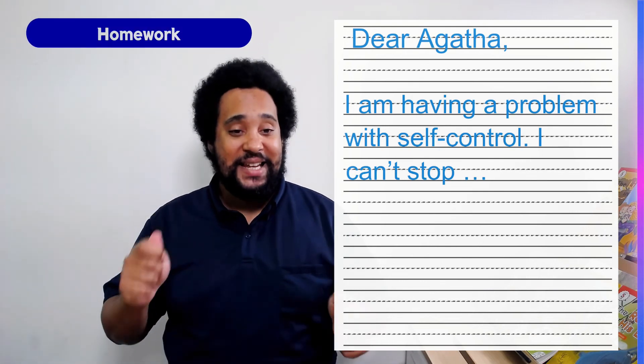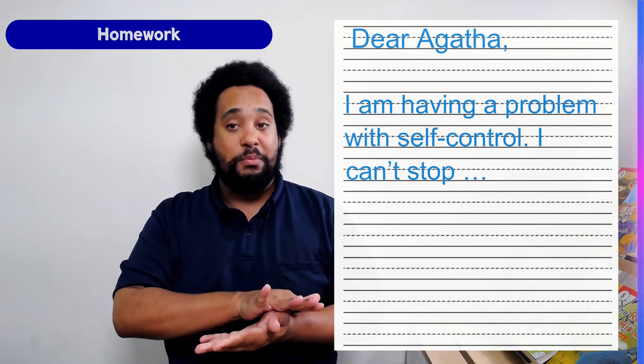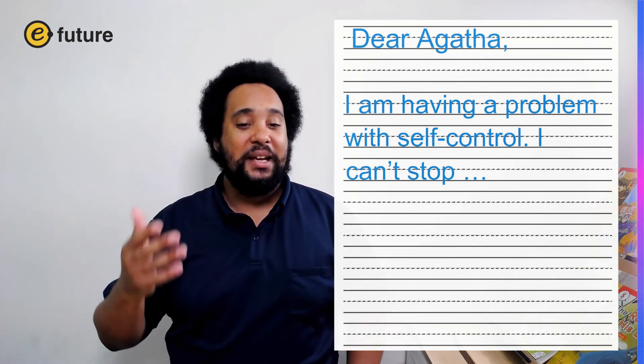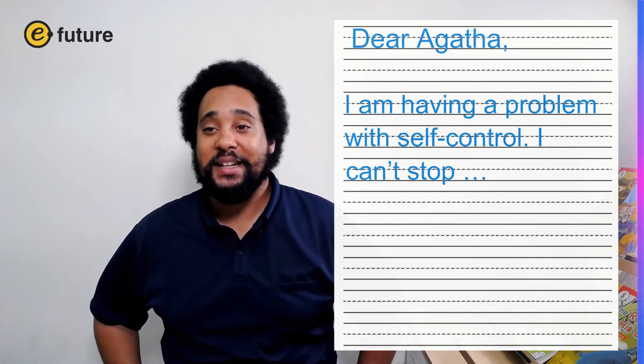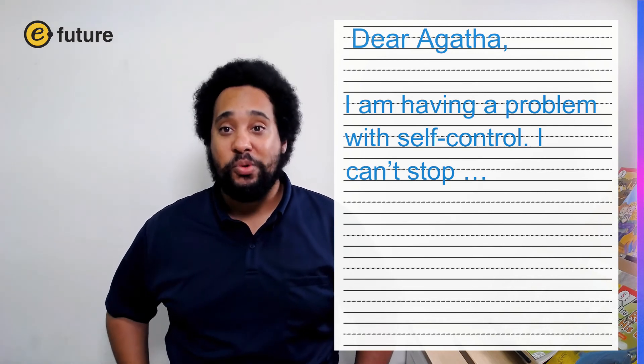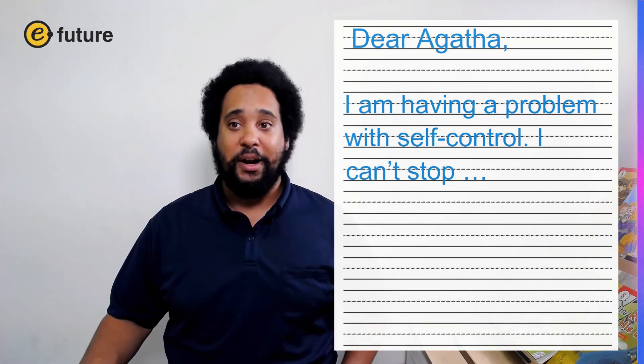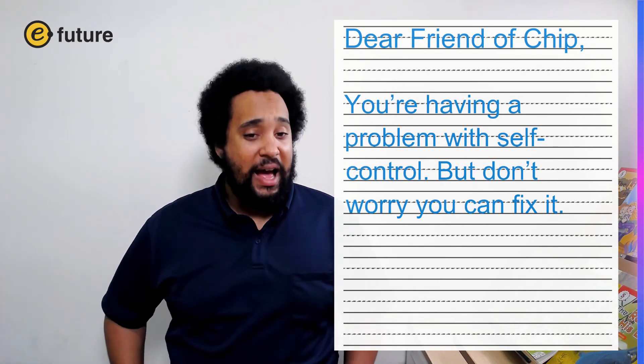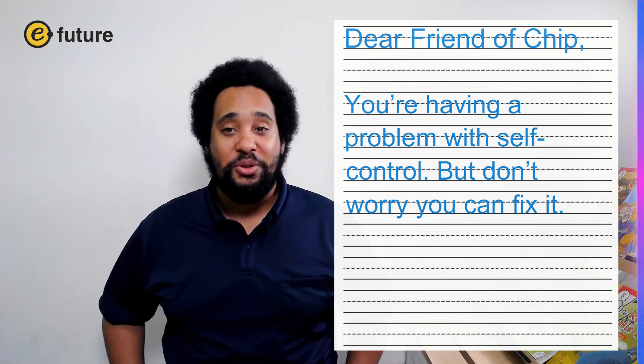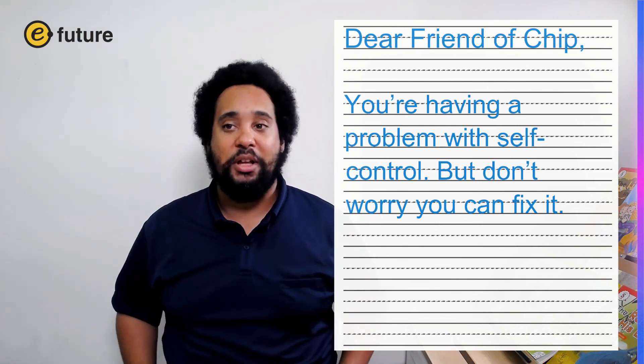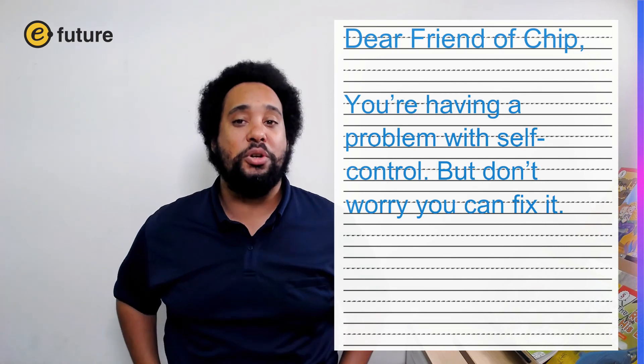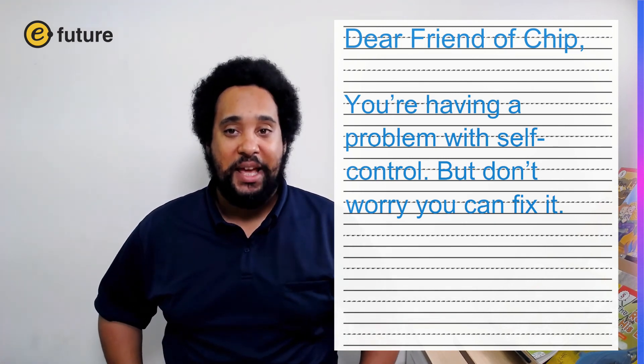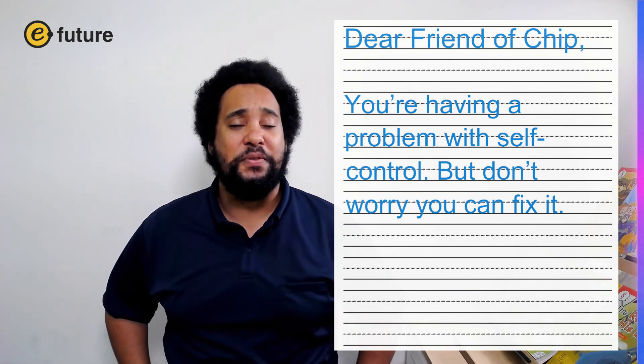For homework, please take this email that I give you. And on the other side of the paper, I want you to write a response like Agatha answers. So you're going to write another email, making a suggestion for how your classmate can solve their problem. If you don't know how to write a response, look at Agatha answers email in the story for help. So you will write an email like this. So an example, dear friend of chip, you are having a problem with self control. But don't worry, you can fix it. So you can start your email like this, or you can write it any way you want. But you want to give a solution to your classmate's problem. When you come back to class, we will share the emails that we have written together. So it's very important that you finish your homework this time.